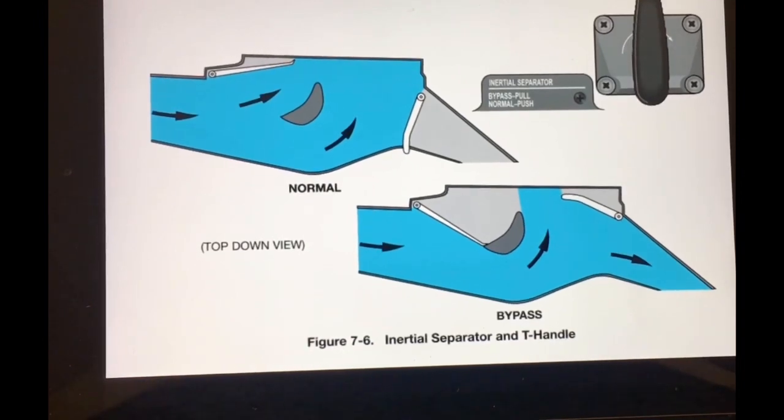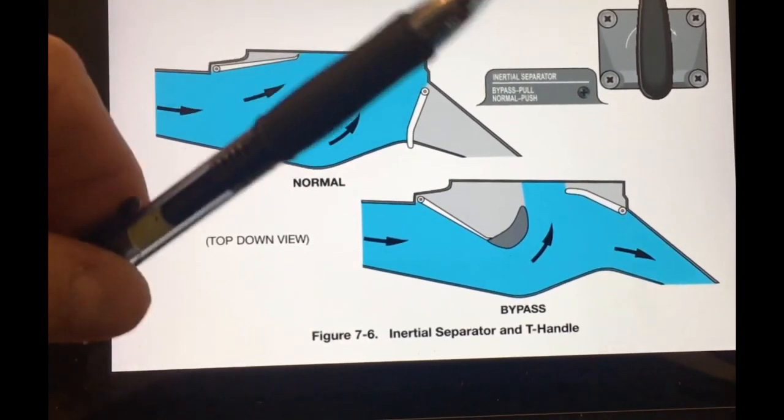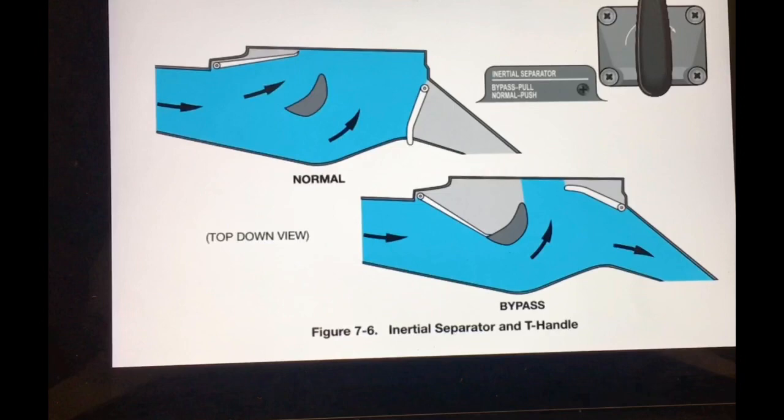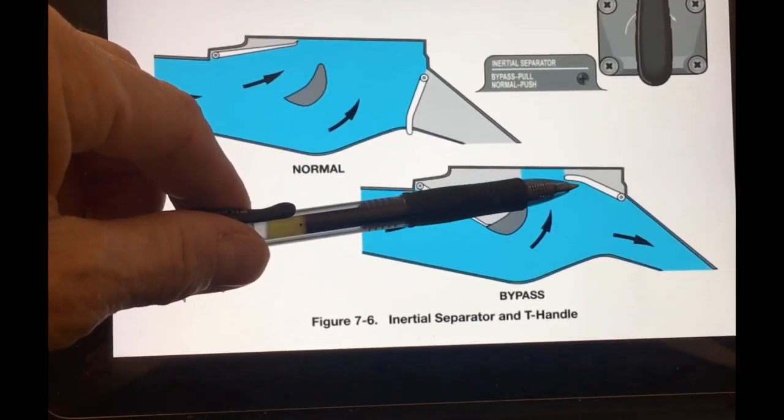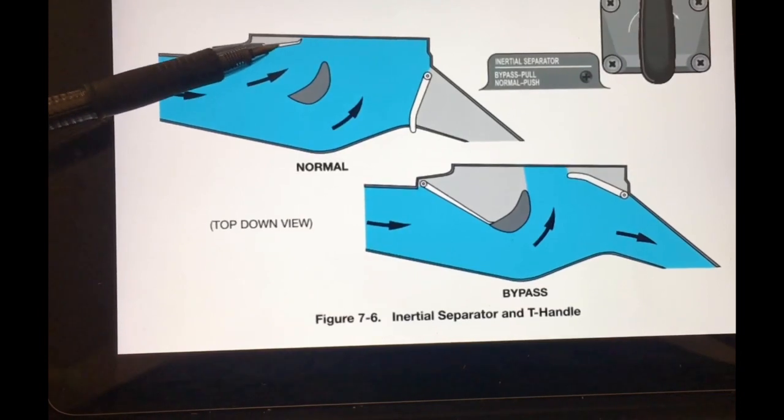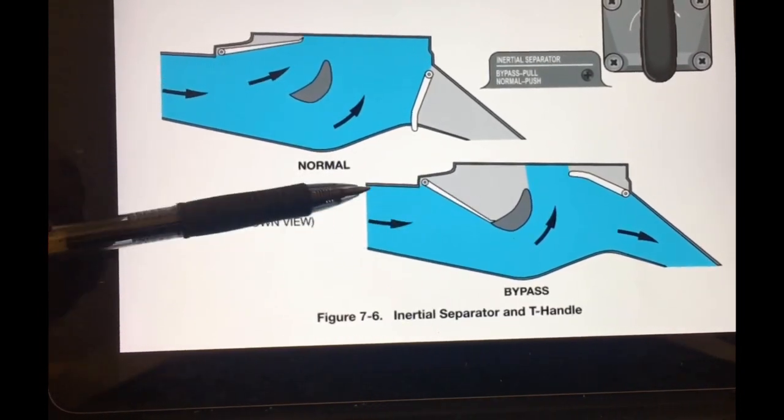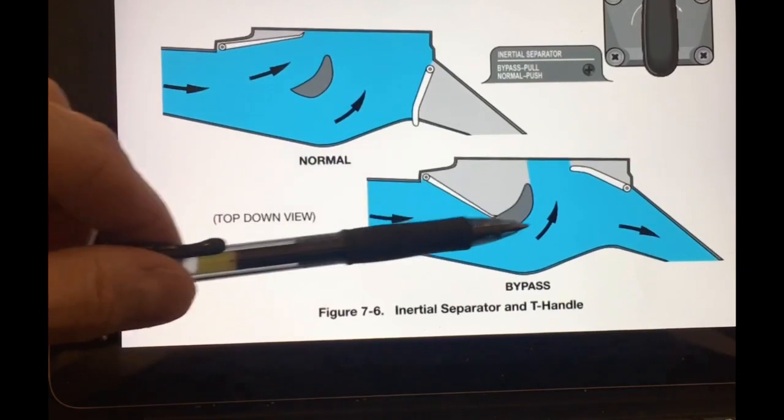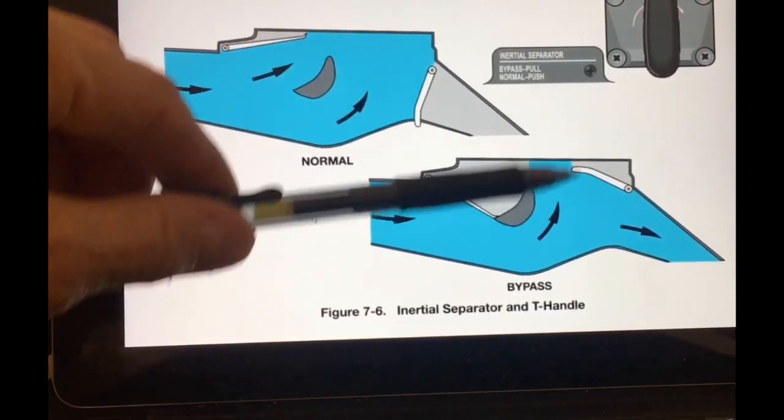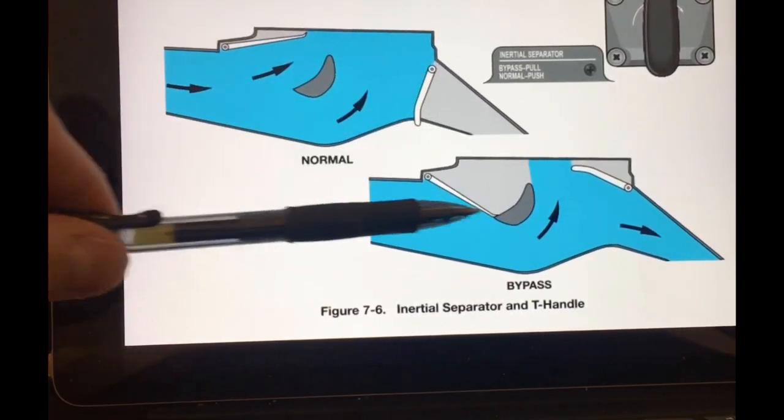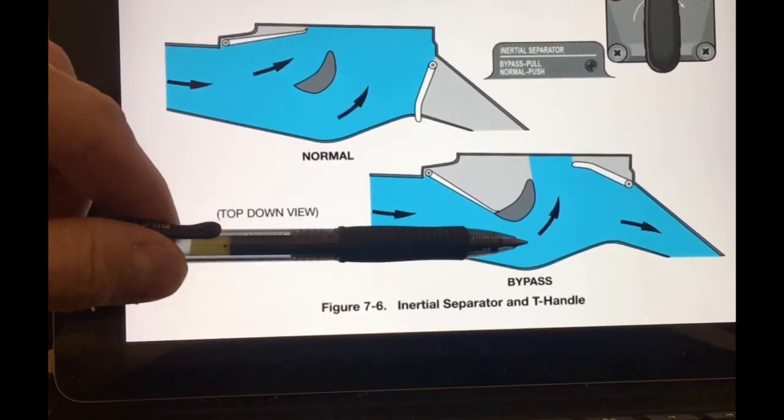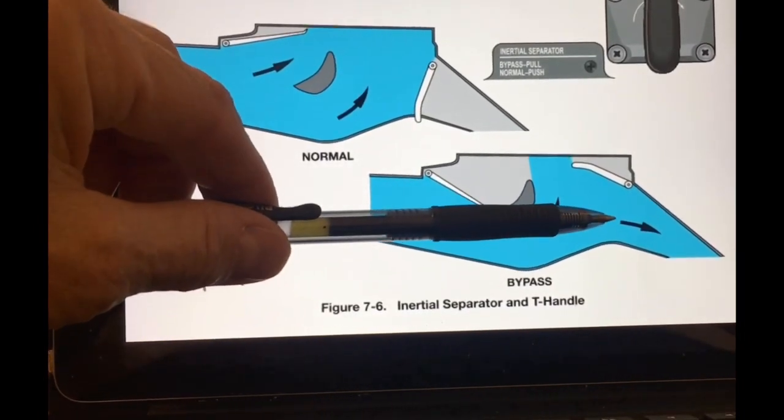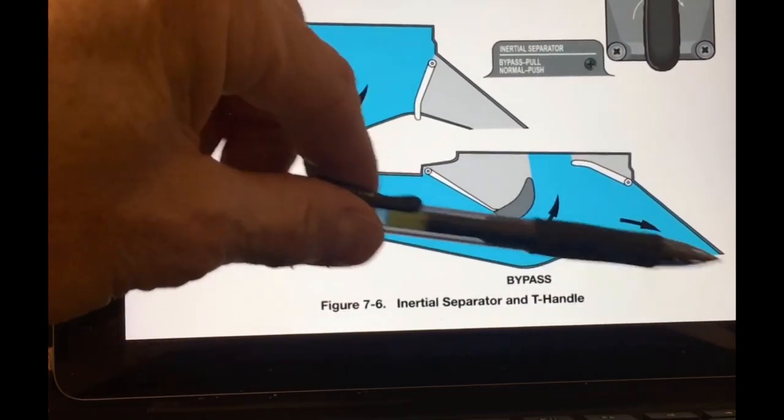In the second position, you pull the handle out. This vane will flip up into this position, this vane will go down. All the air has to go around, and any air that goes to the engine has to make a sharp turn into the engine. The inertia of any solid particles such as sand, dirt, snow, or ice would get ejected overboard.